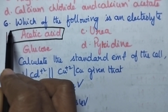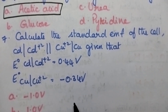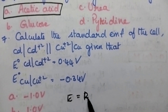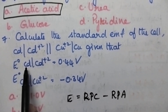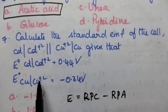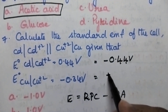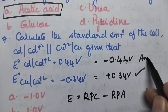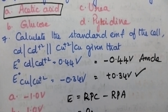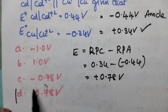Calculate the standard EMF of the cell: cadmium and copper. EMF of the cell = reduction potential of cathode (RPC) minus reduction potential of anode (RPA). Oxidation potentials are given, so we convert to reduction potentials by changing the sign. Copper acts as cathode and cadmium as anode. EMF = 0.34 − (−0.44) = +0.78 volts. Option D is the right answer.